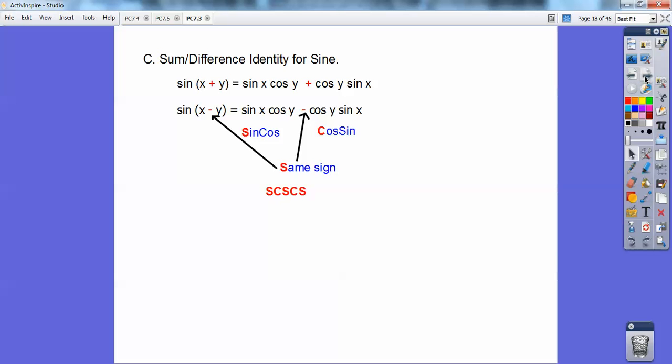How I remember this is it goes sine cosine, and it's always the same sign in the middle, then it goes cosine sine. So basically sines go follow the pattern S, C, S, C, S. Sine, cosine, same sign, then cosine, sine.